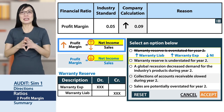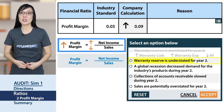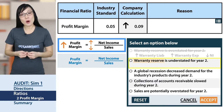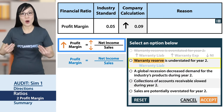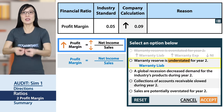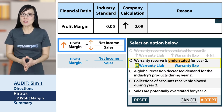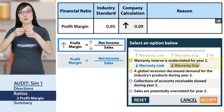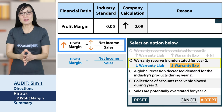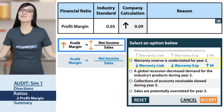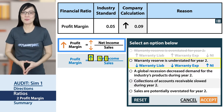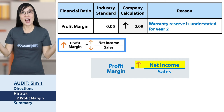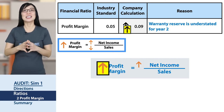Choice B: warranty reserve is understated for year two — this is the opposite. The warranty liability is understated, so warranty expense is also understated. A smaller expense means a smaller minus, which results in a higher net income. Plugging that into our ratio — that's a match, because when net income is higher, profit margin is also higher.